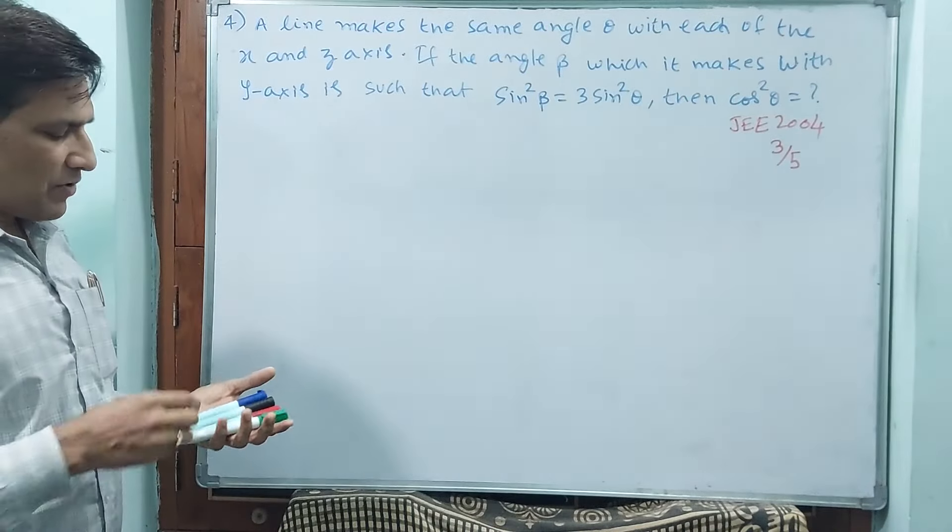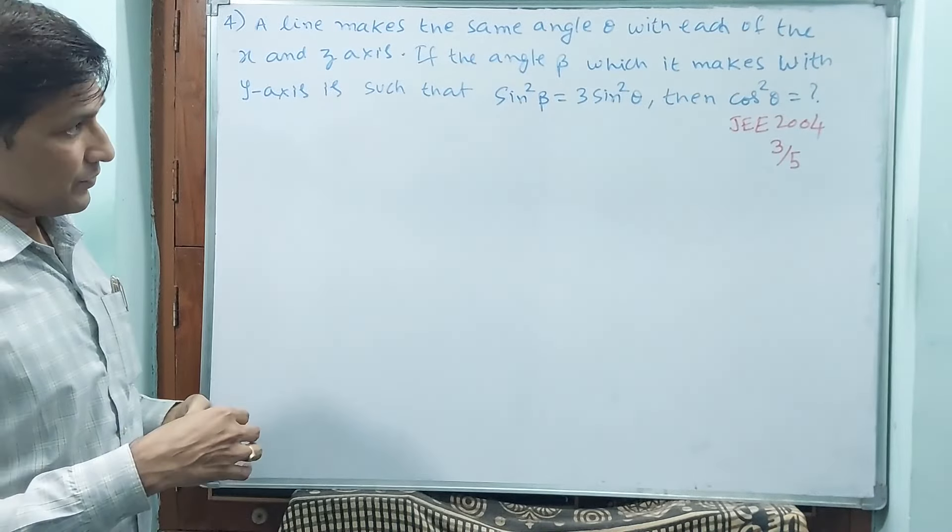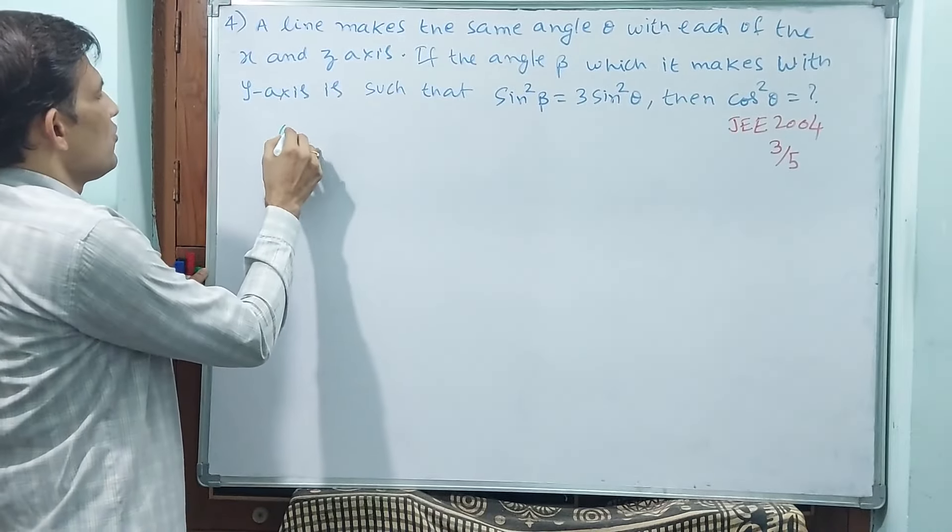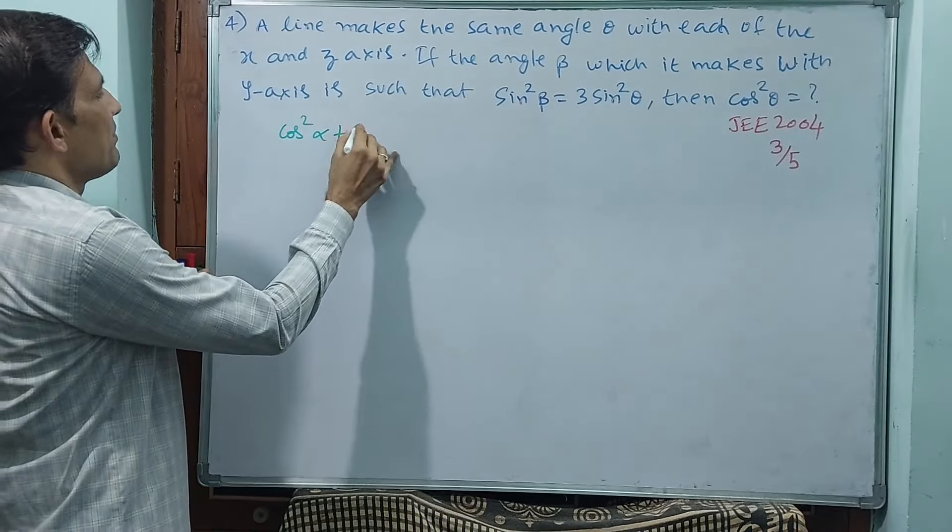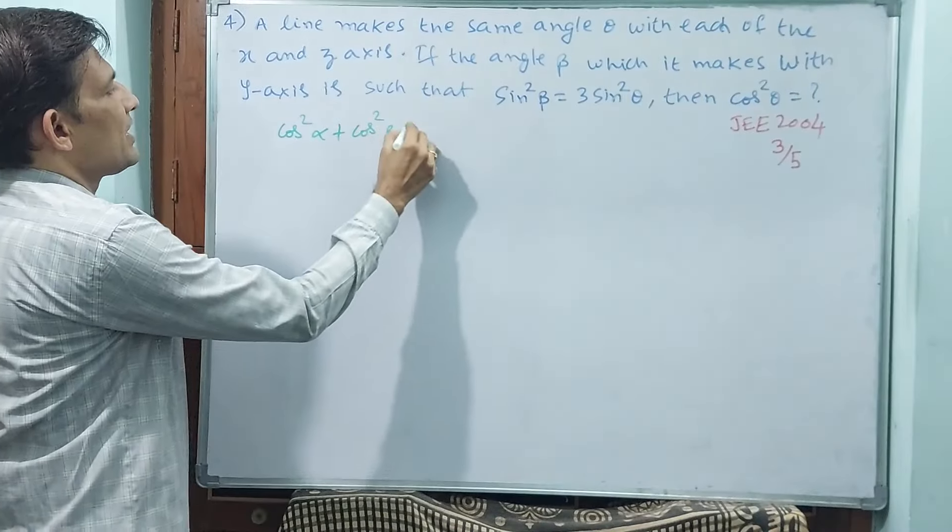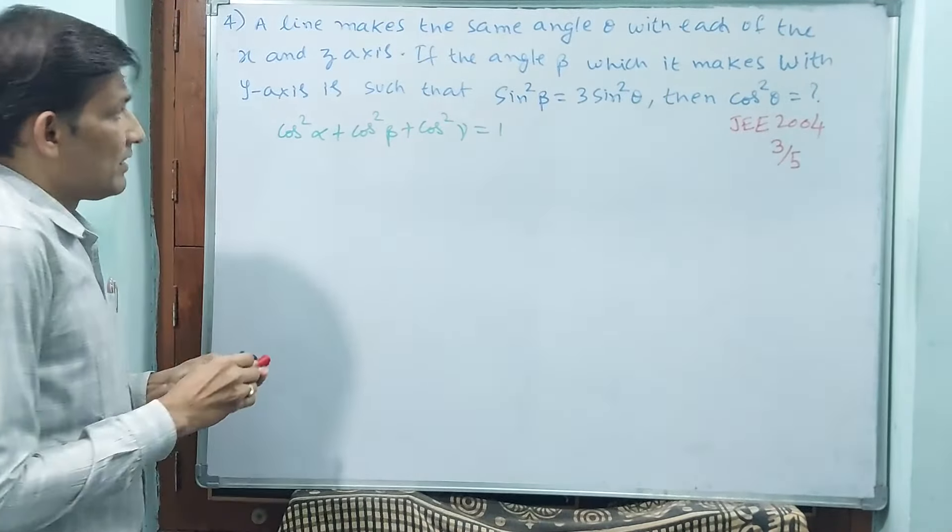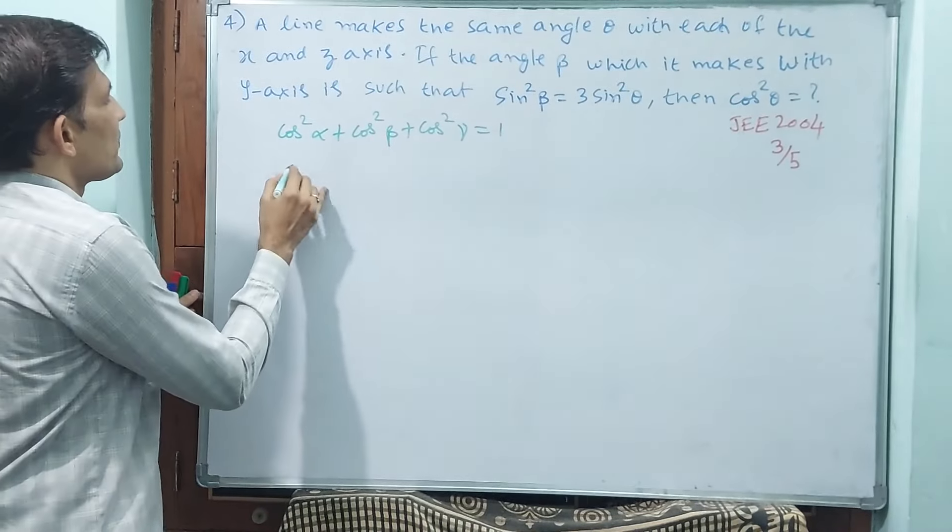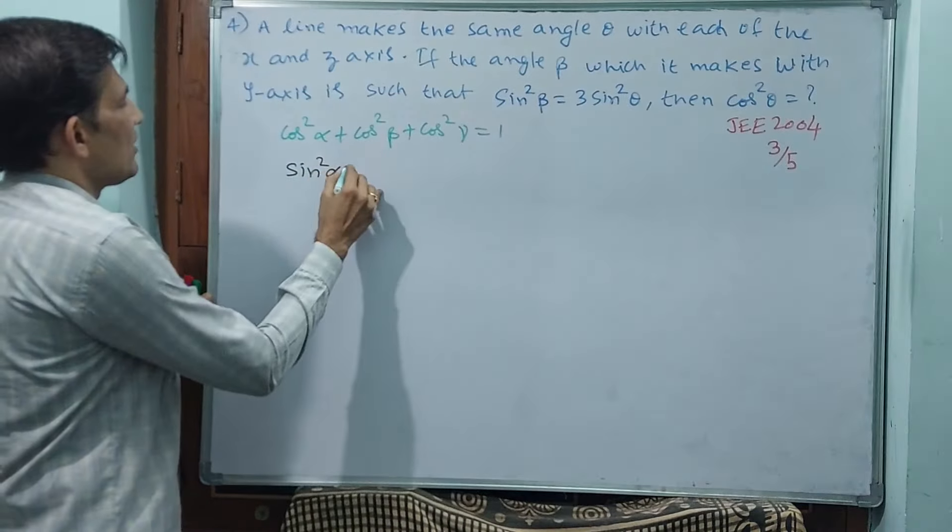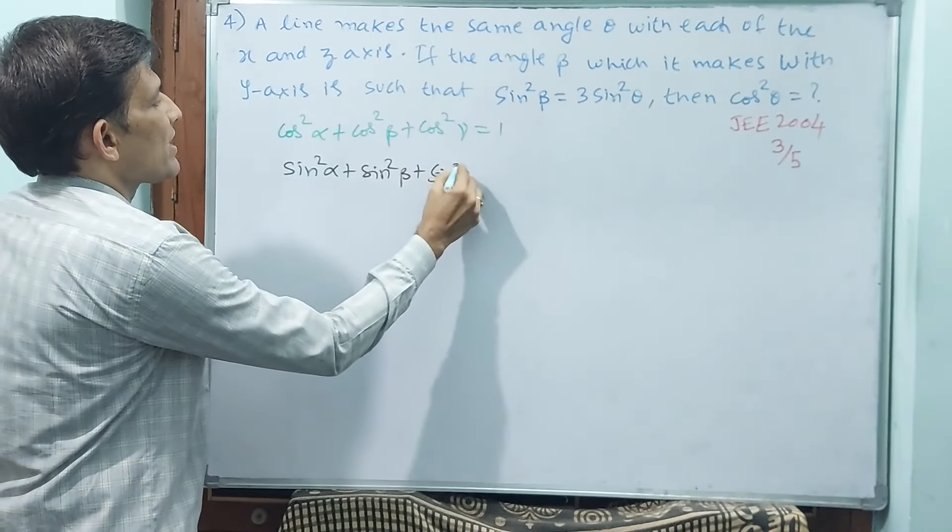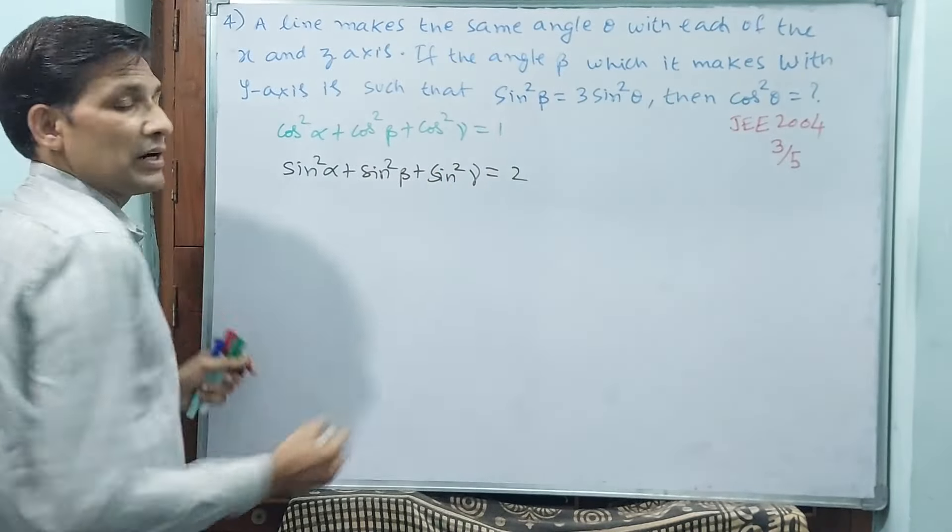Then what is the value of cos square theta they are asking. See here what I want to say. This formula is there. We know cos square alpha plus cos square beta plus cos square gamma is equal to 1. From this formula, sin square alpha plus sin square beta plus sin square gamma is equal to 2 will come.